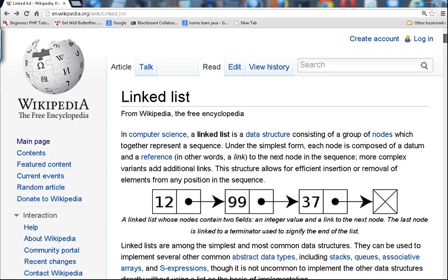Hi, I'm Graham Roberts. From Wikipedia here we can see that a linked list is a data structure with a group of nodes which together represent a sequence.